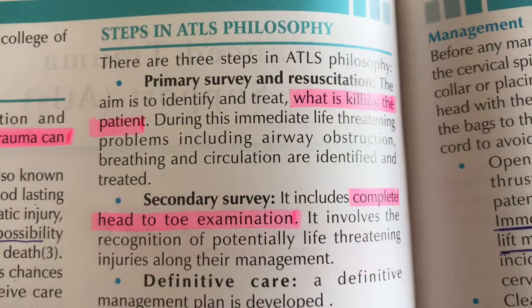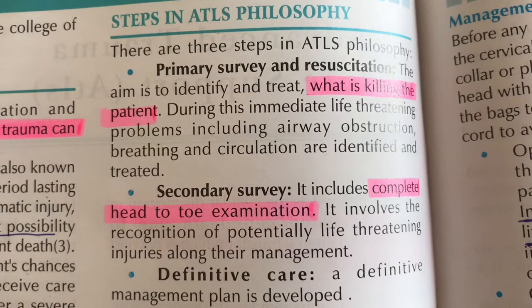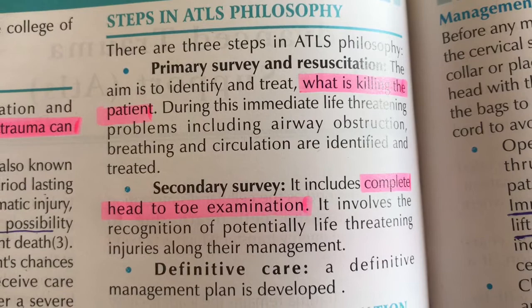In ATLS philosophy, there are three major steps: primary survey and resuscitation, secondary survey, and definitive care. In primary survey and resuscitation, we diagnose what is killing the patient — primarily airway obstruction, breathing, and circulation problems. In secondary survey, we perform a head-to-toe examination identifying potentially life-threatening injuries. In definitive care, we establish a definitive management plan.